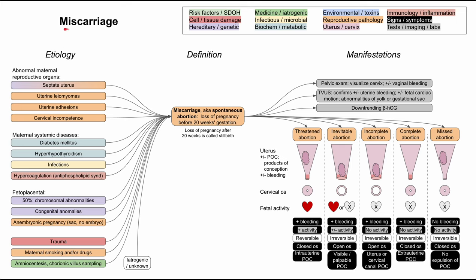This is a mechanism of disease map for miscarriage, also known as spontaneous abortion. I'll be talking about the etiology, the definition, and the manifestations of miscarriage. The color coding is listed in the top right of the slide, and I'll be talking through each of these boxes one by one as we repopulate the flowchart.